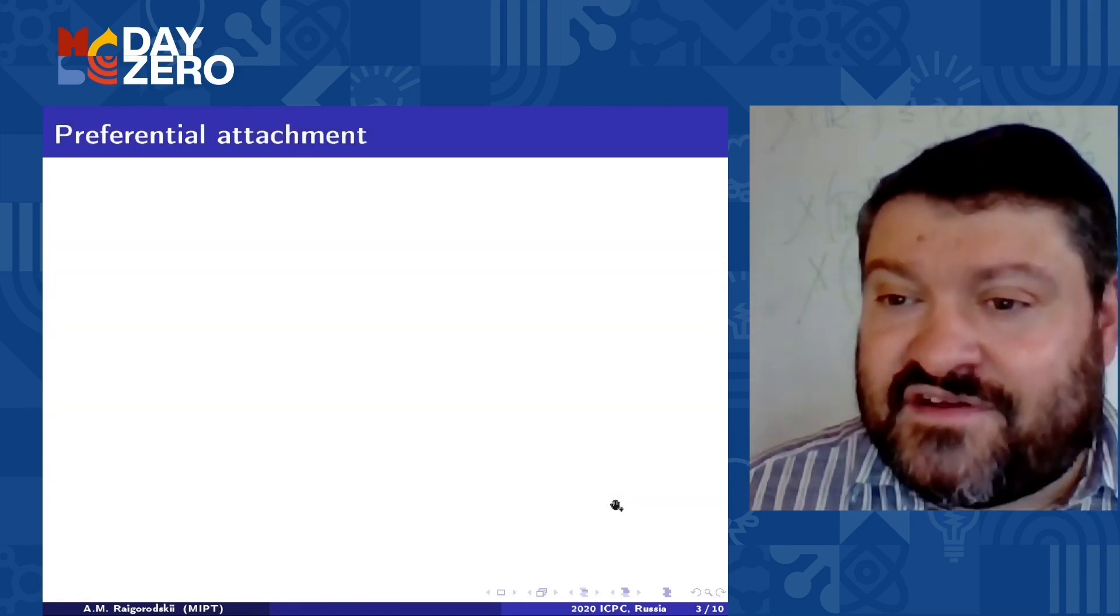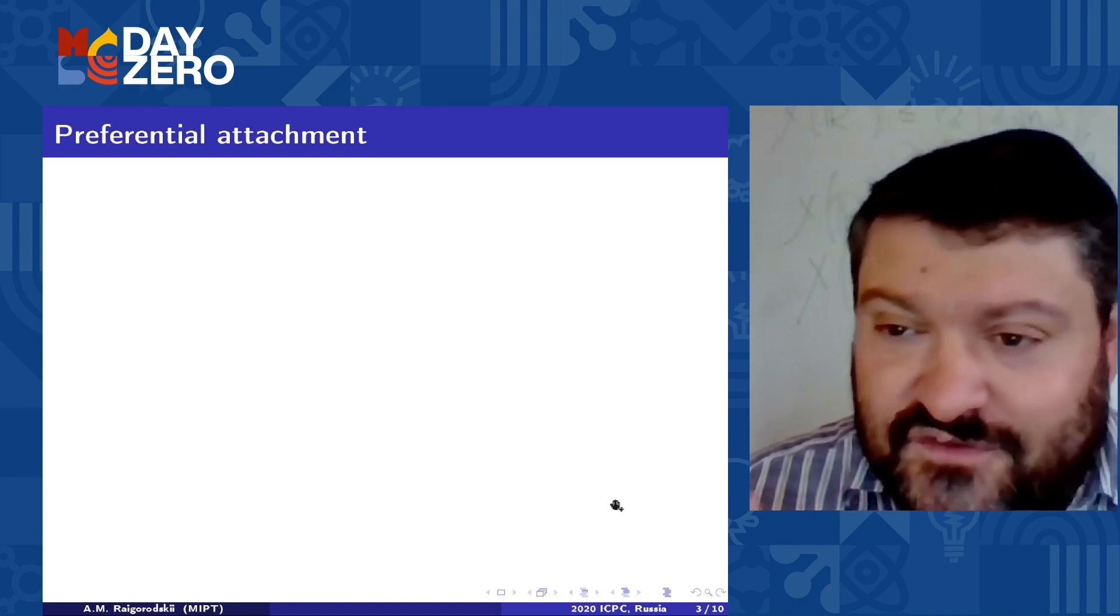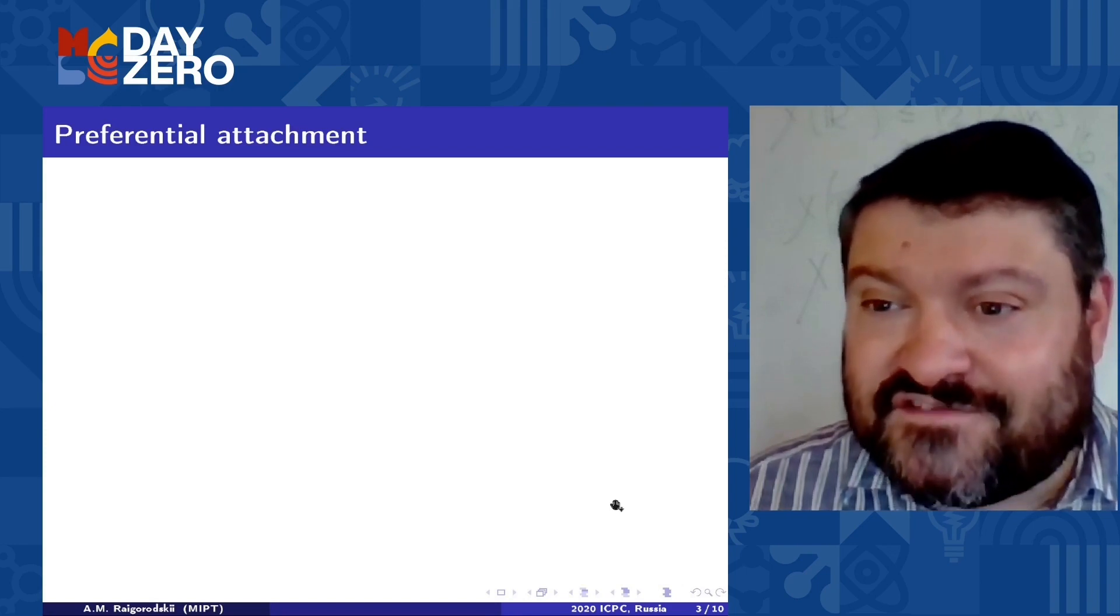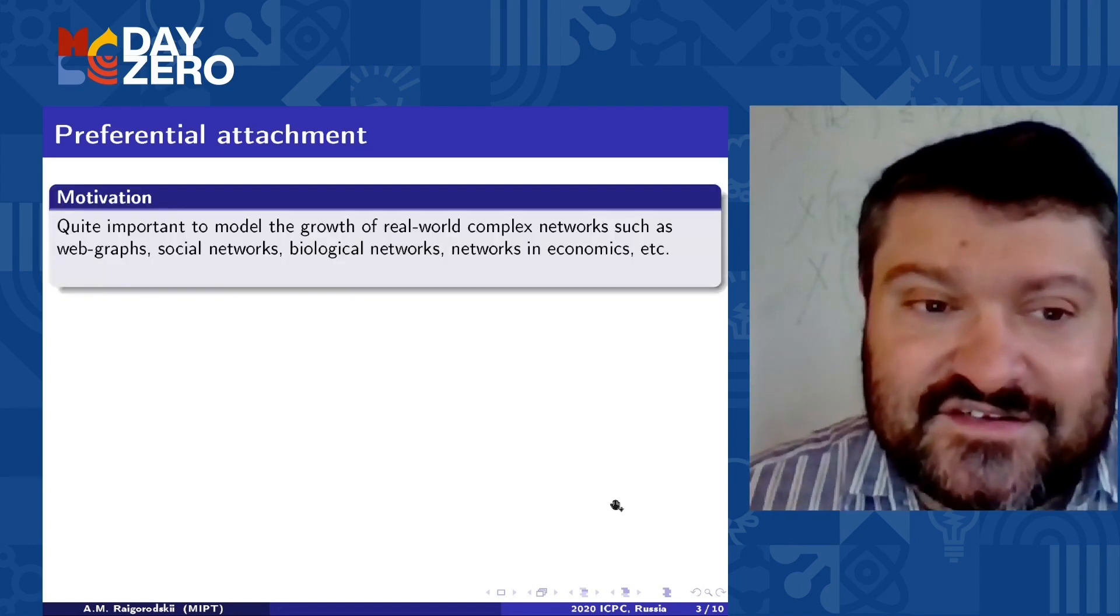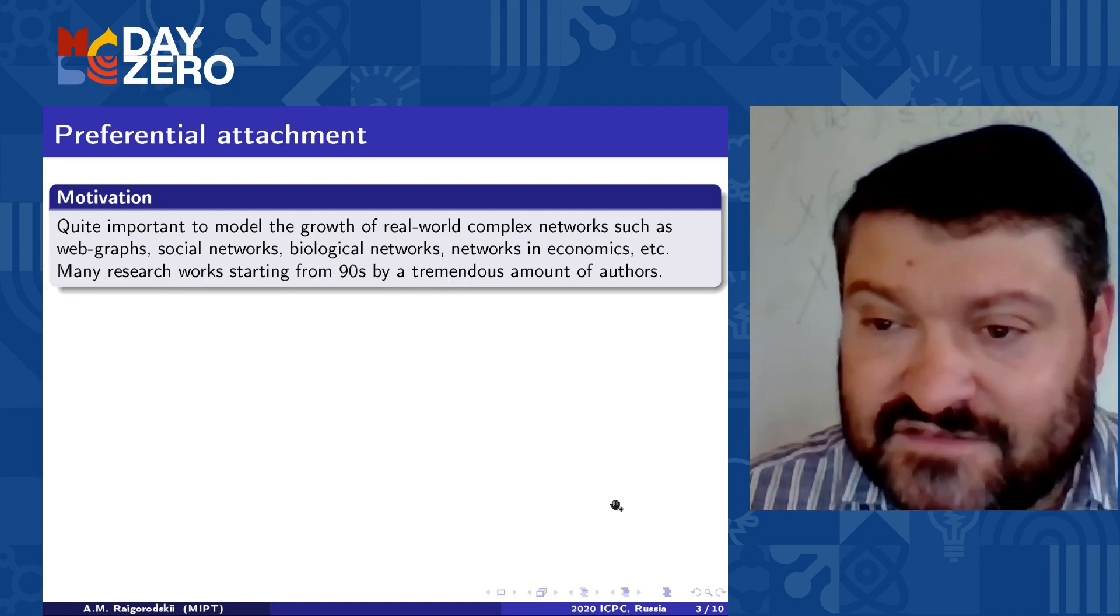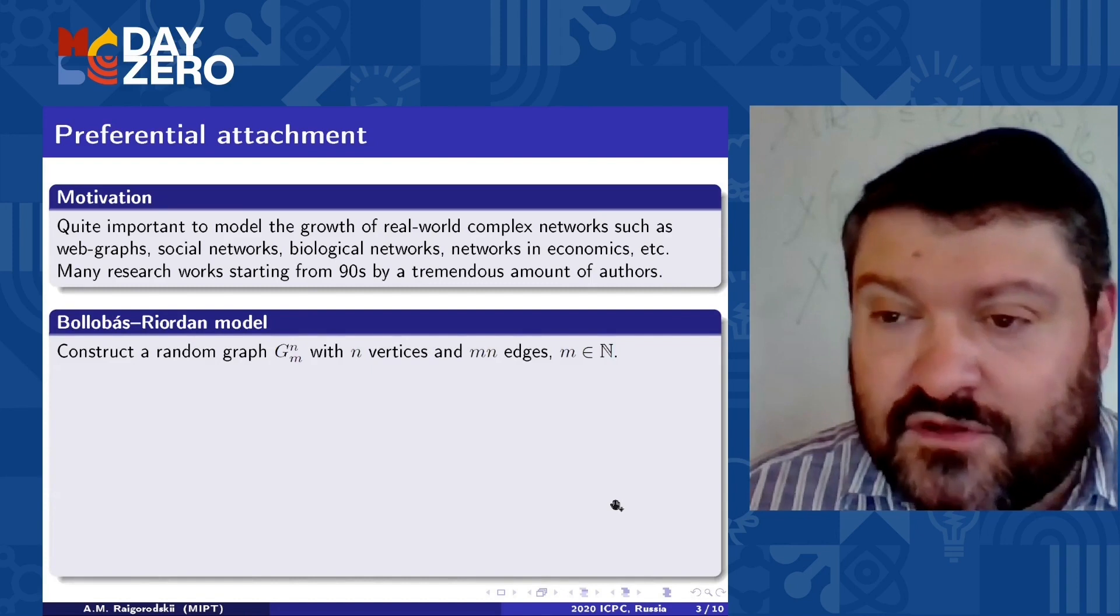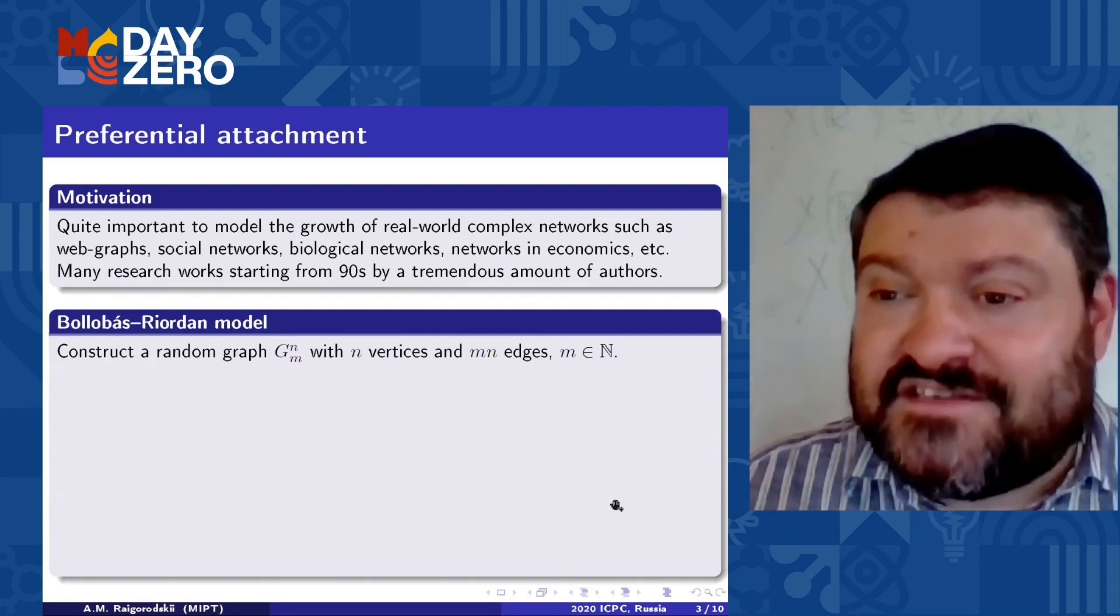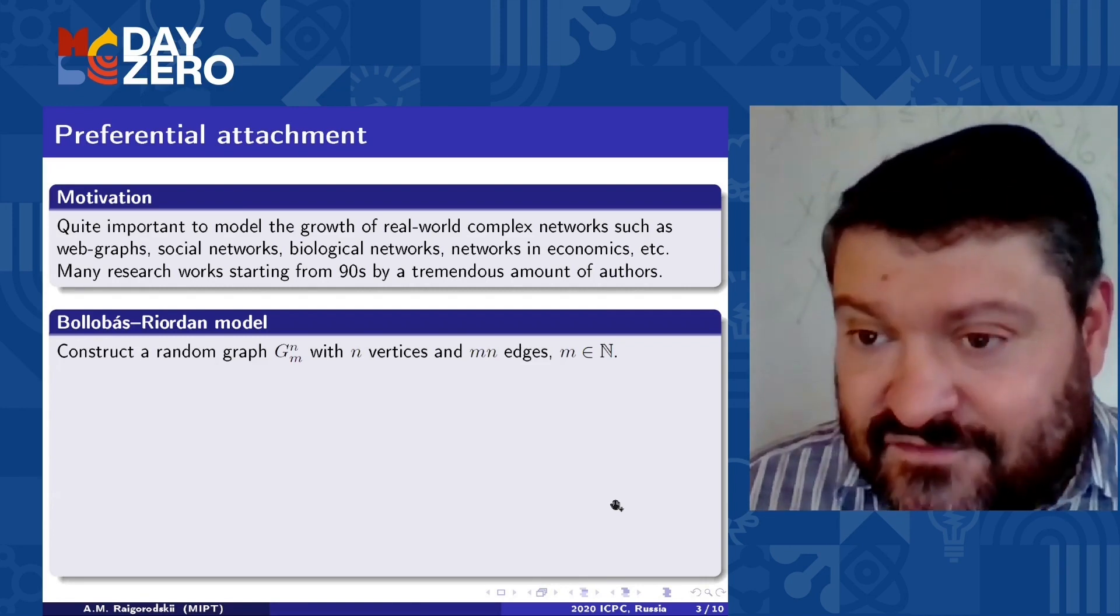I start by very important random graph models which are designed to reflect the reality of web graphs, social networks, biological networks in some sense. This is the so-called preferential attachment models which are very important to many different applications in many different companies including Yandex, Huawei, Burbank and so on. The research was started in the end of 90s of the 20th century by a tremendous amount of different authors. The first mathematical model was proposed by Bollobás and Riordan in the beginning of 2000. This is the model of preferential attachment which reflects the sparsity of a real world network like web graphs and which also reflects some other very important features of this real world network.